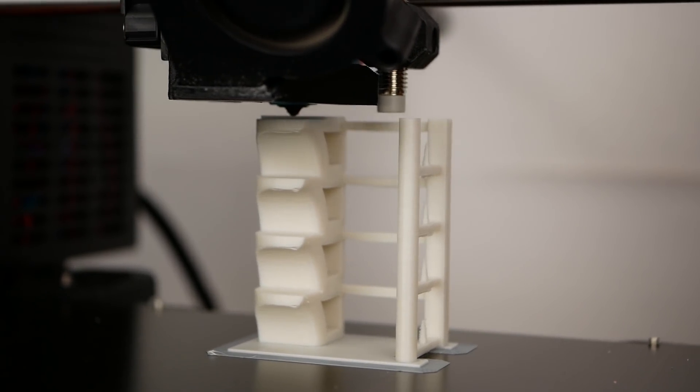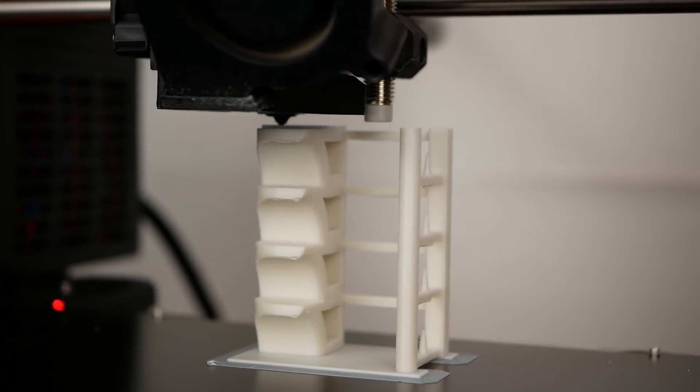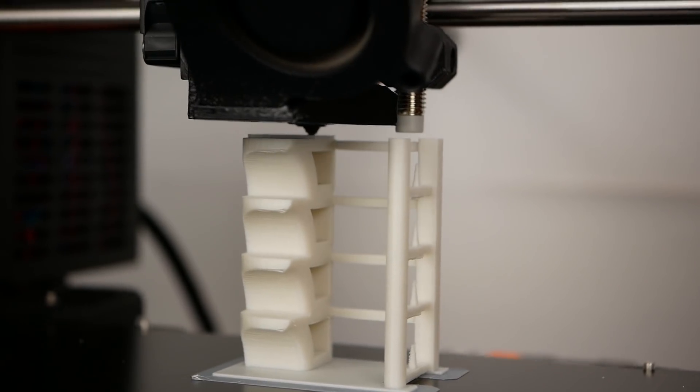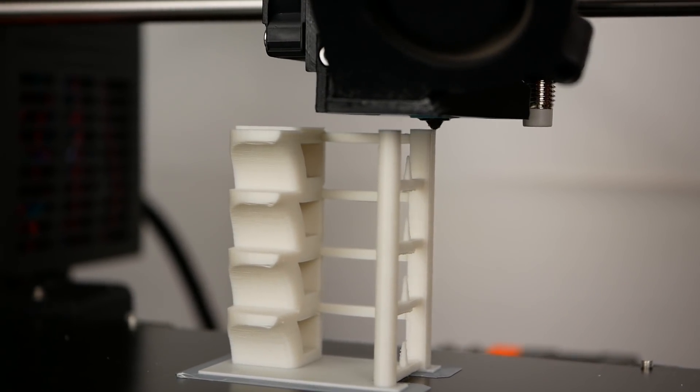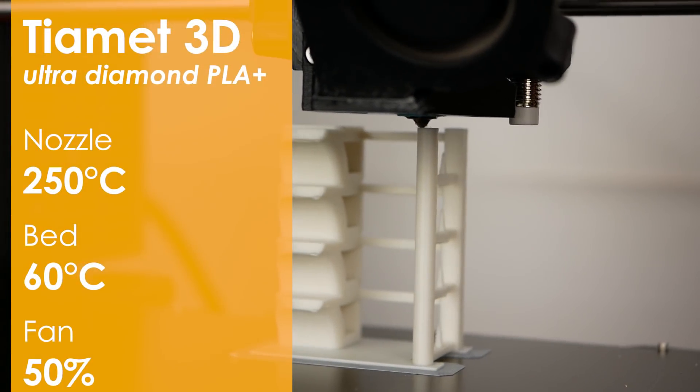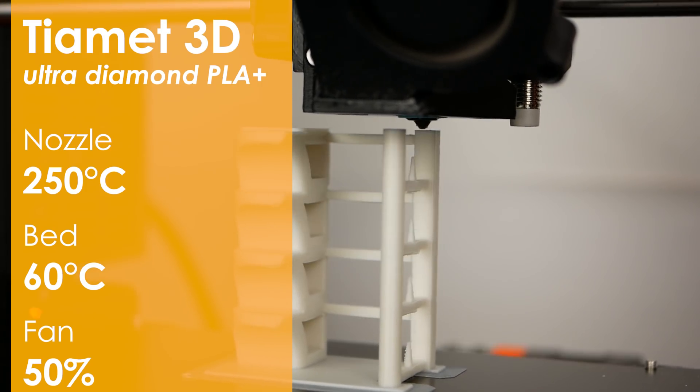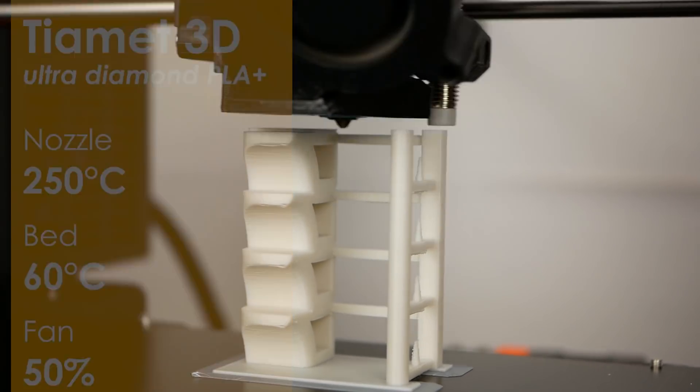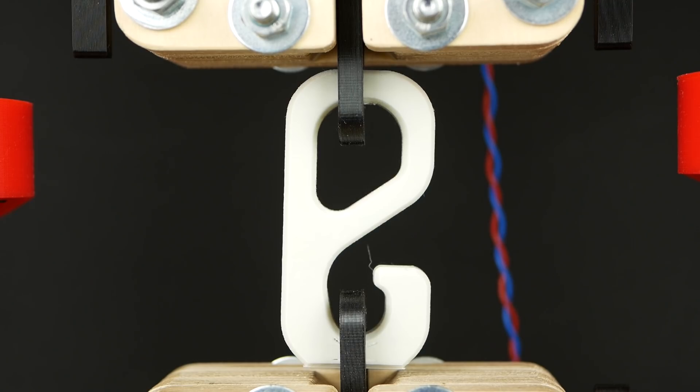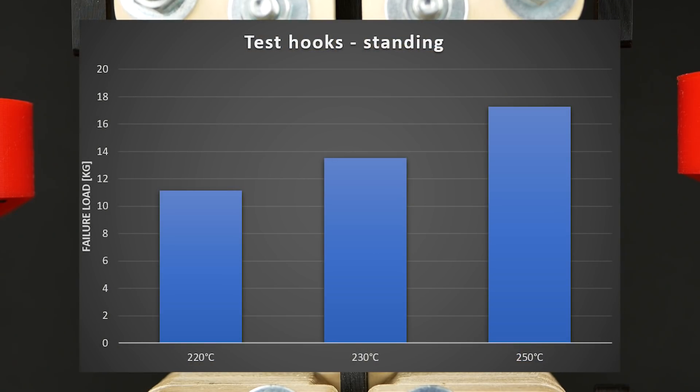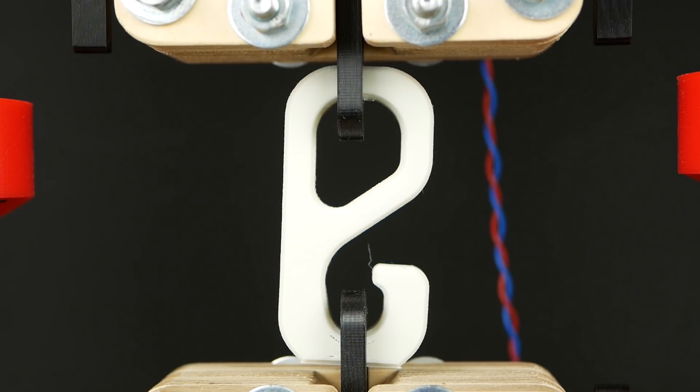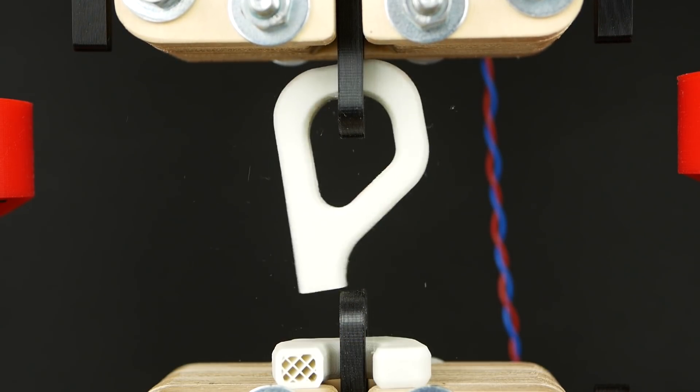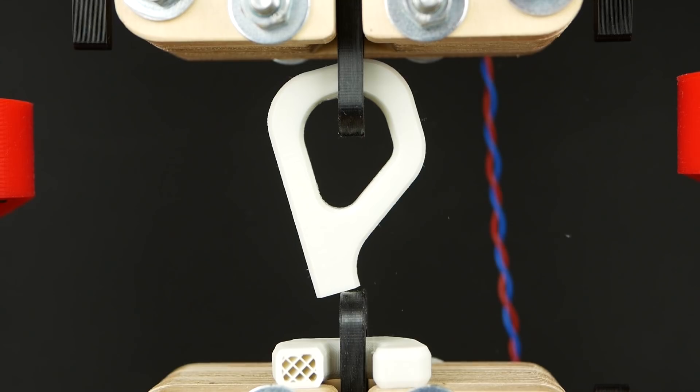In terms of nozzle temperature I tried settings between 260C down to 220C. Besides slight changes in stringing there wasn't any real difference on the temperature tower detectable. For the sake of layer adhesion I compared 230C to 250C and decided to go all the way up to 250C for the rest of the samples.